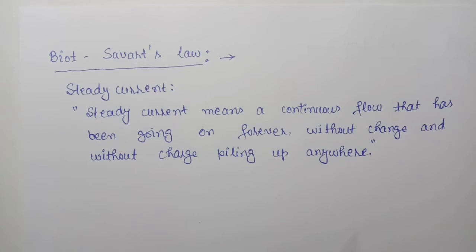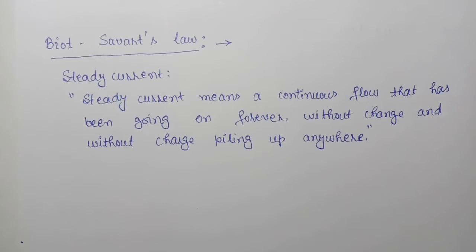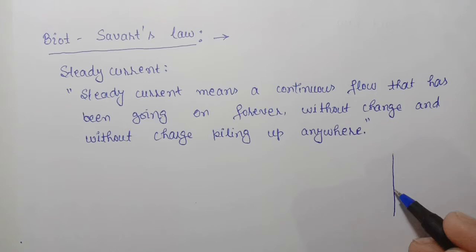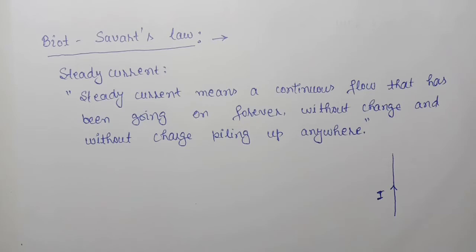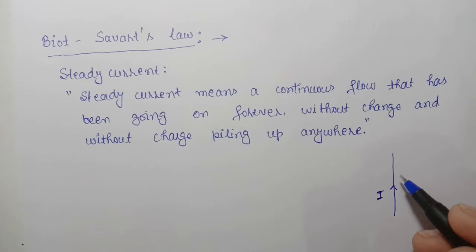In reality there is no steady current in practice. But for most practical purposes we presume that current is steady because the fluctuations are reasonably slow. Now suppose we have a wire, or we can say a current carrying conductor, and suppose I here is the steady current. The magnitude of current is the same along the wire — that is, there is no piling up of charges.